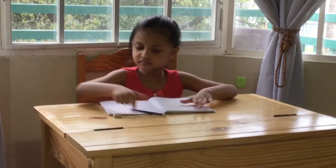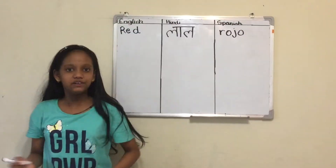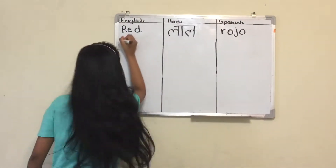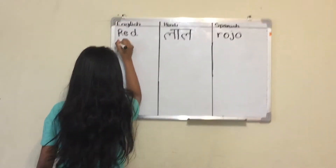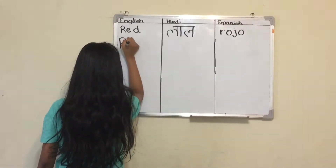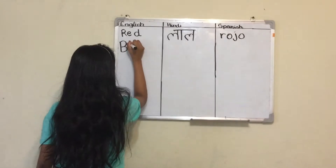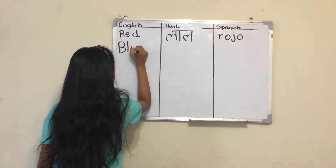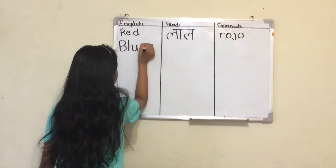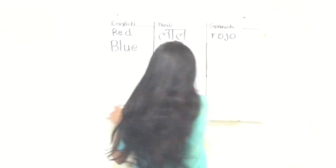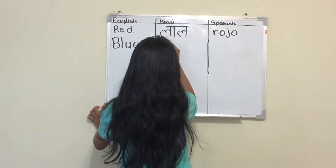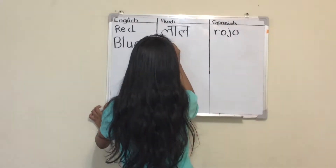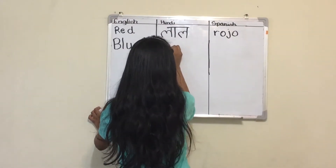Let's write Blue now. Blue's spelling is B, L, U, E. In Hindi, Blue means Neela.